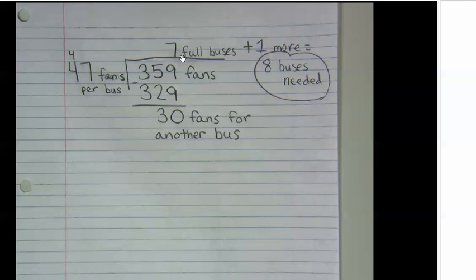So this 7 up here means that we have seven buses that are going to be full with 47 people in each one, and then we need one more bus for these 30 people. So 7 plus 1 is 8 buses that are needed to take everybody to the game.